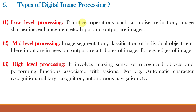Low level processing involves primitive operations such as noise reduction, image sharpening, enhancement, etc., which we have already studied in previous classes — and here the input and output both are images. Higher than low level is mid level processing, which includes image segmentation, classification of individual objects, etc. Image segmentation we have studied from video class number 48 to video class number 52.